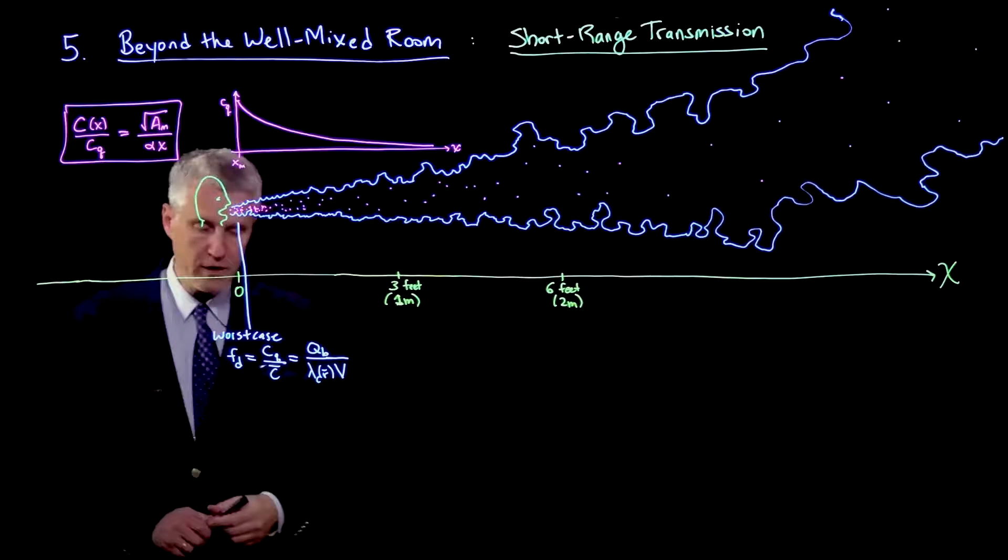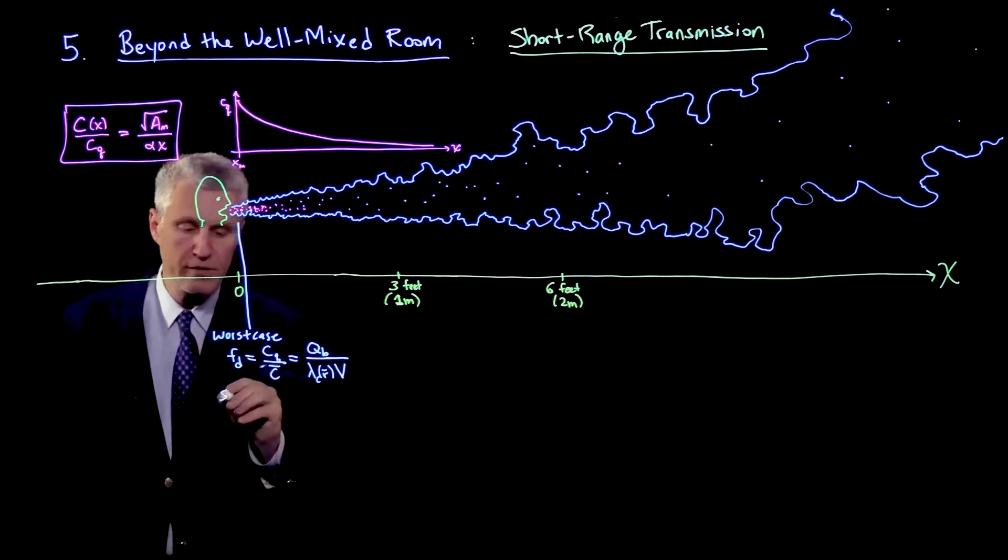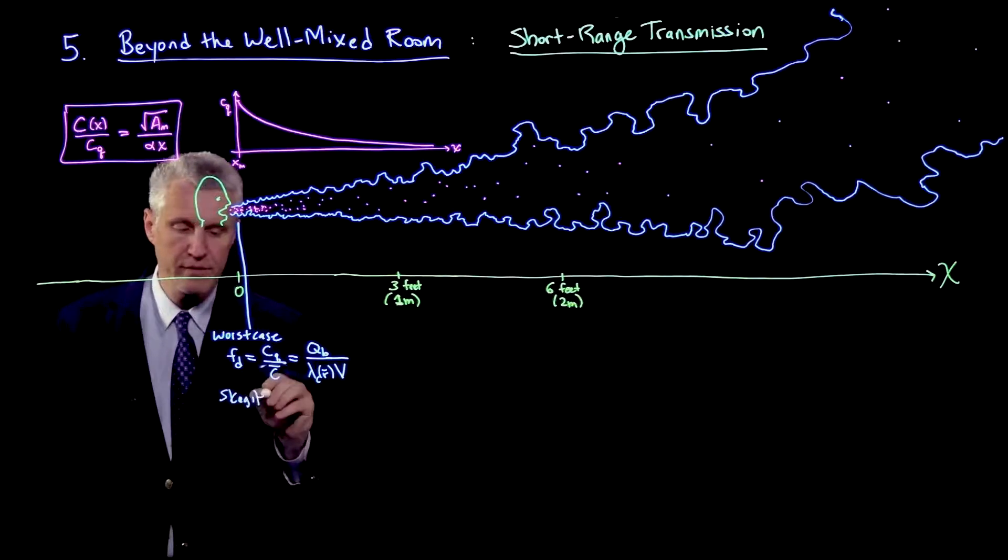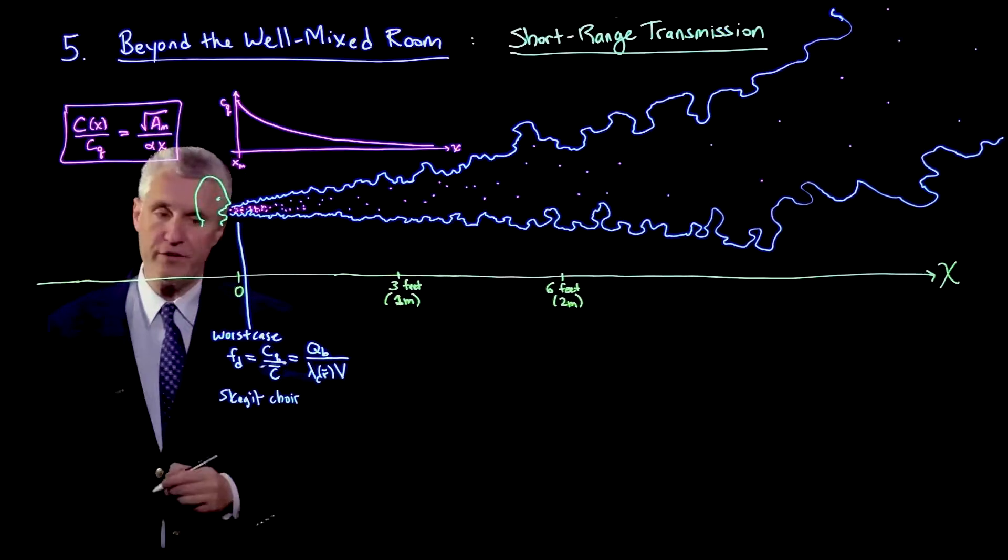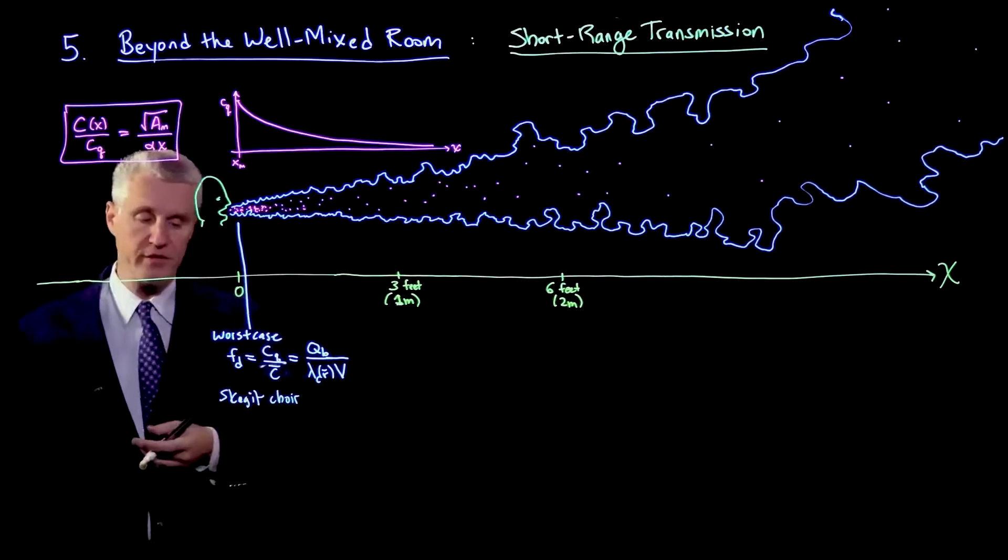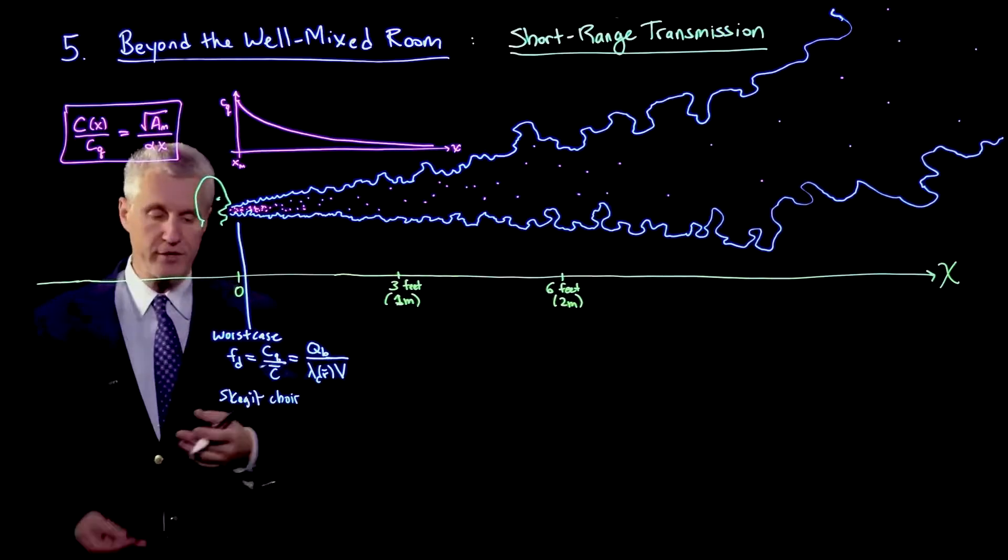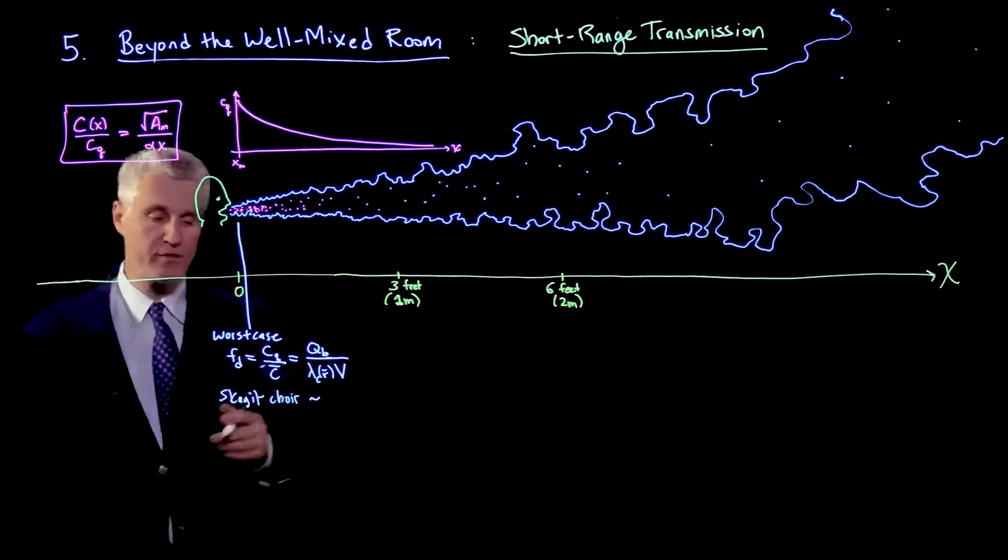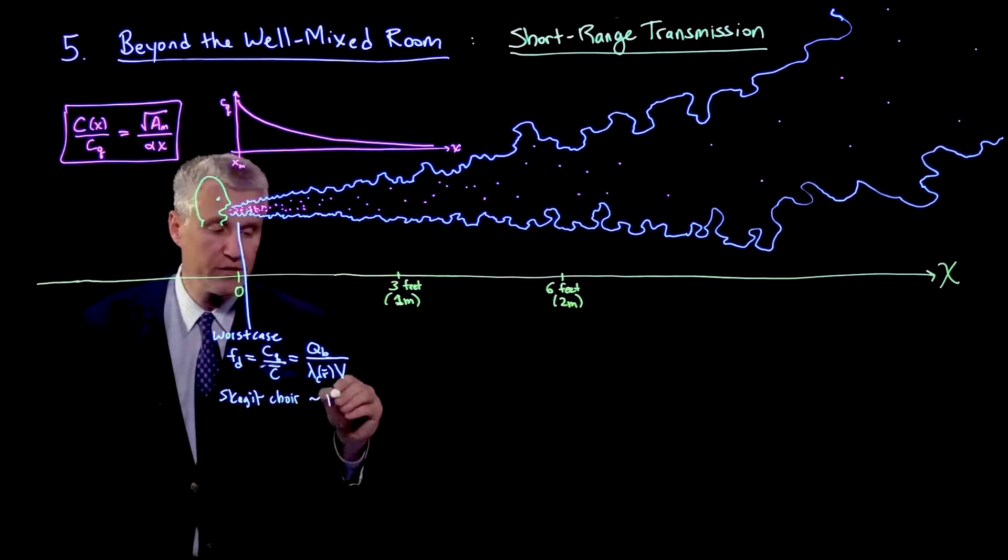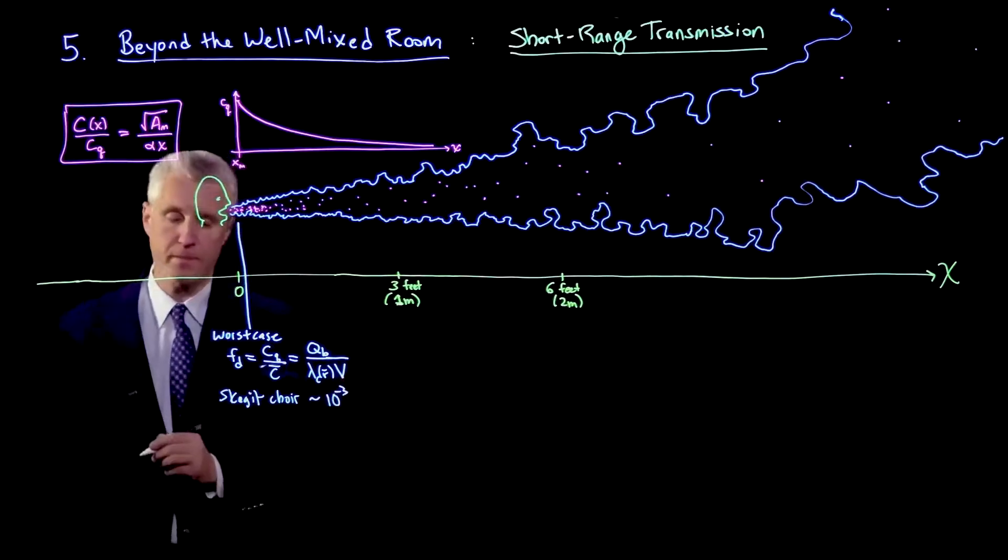For the Skagit Valley Chorale which we've analyzed, that was a fairly large room with a 4.5-meter ceiling, but it didn't have very good ventilation. In that case, this number Fd was 10 to the minus 3.